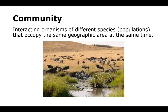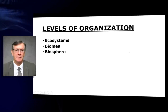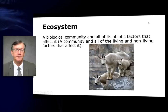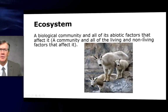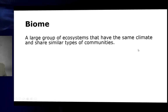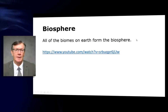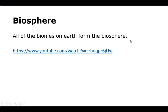In the illustration we have a community of wildebeest and zebras that are interacting. Further levels of organization include ecosystems, biomes, and the biosphere. A biological community and all of its abiotic factors that affect it are called an ecosystem. A biome is a large group of ecosystems that have the same climate and share similar types of communities. All of the biomes on Earth form the biosphere.